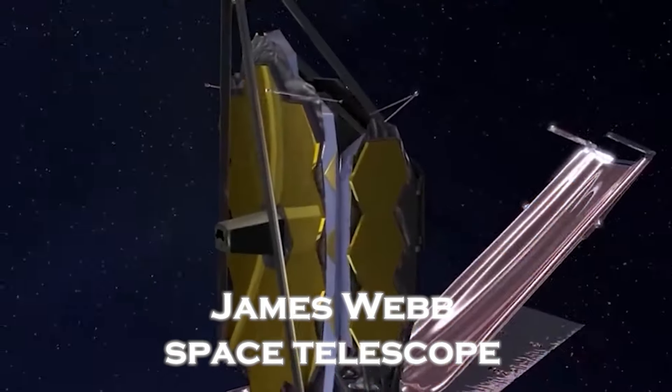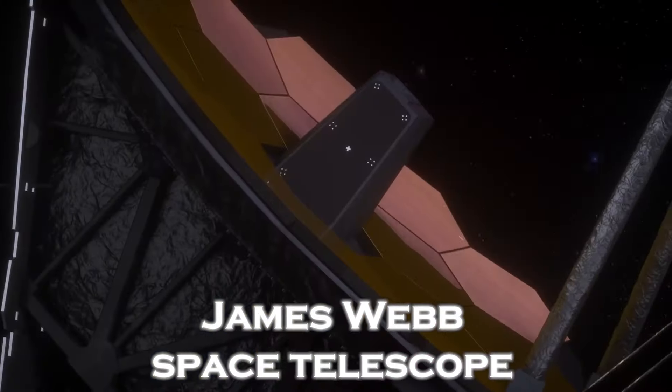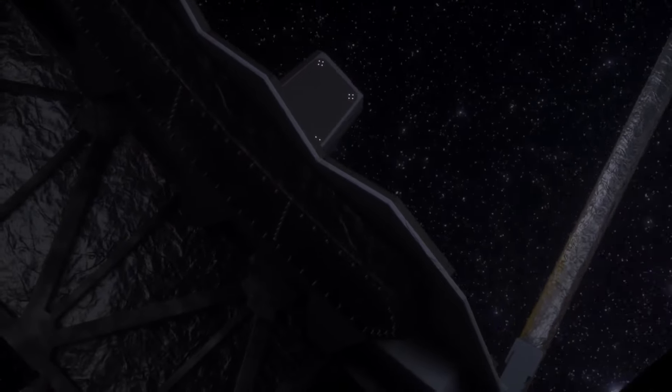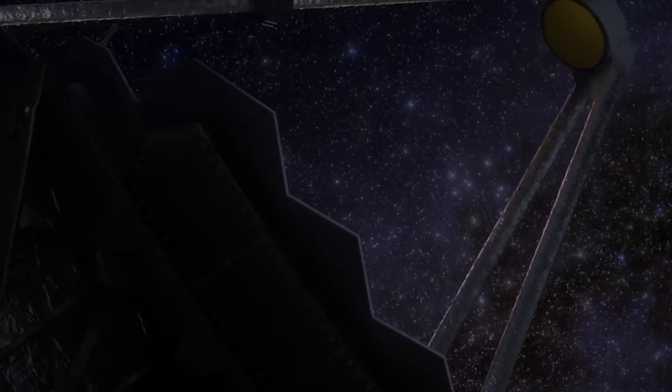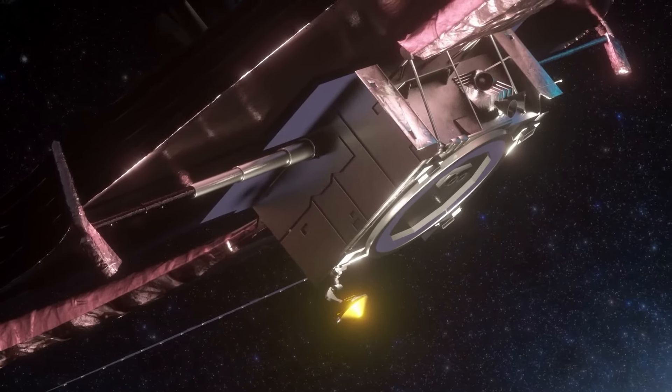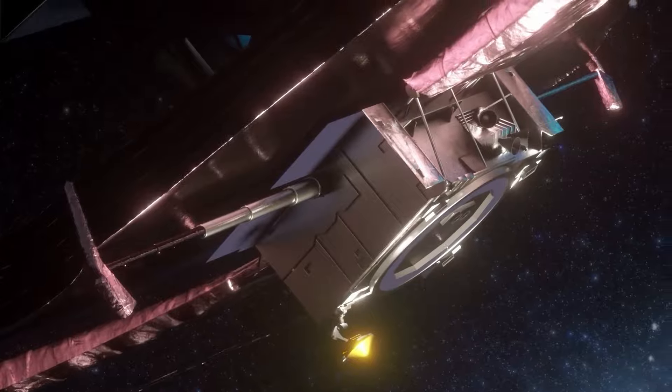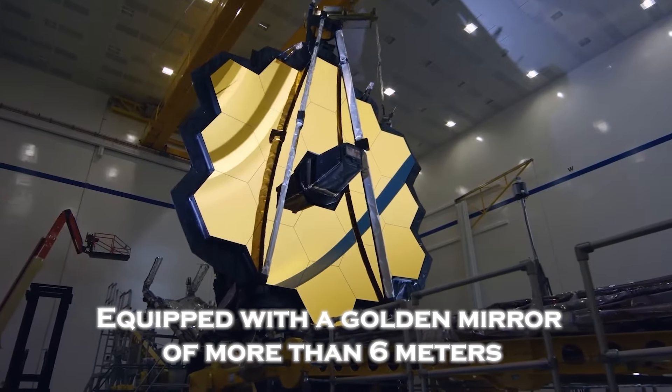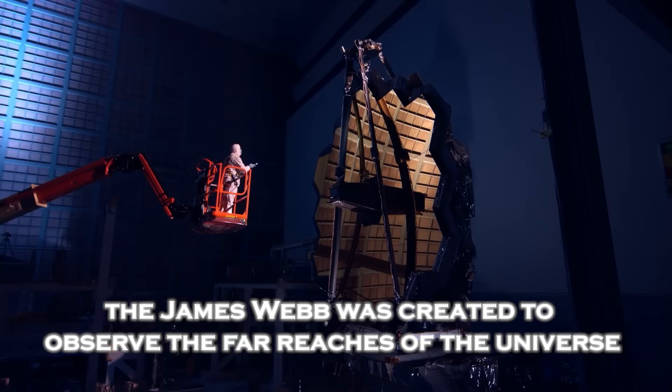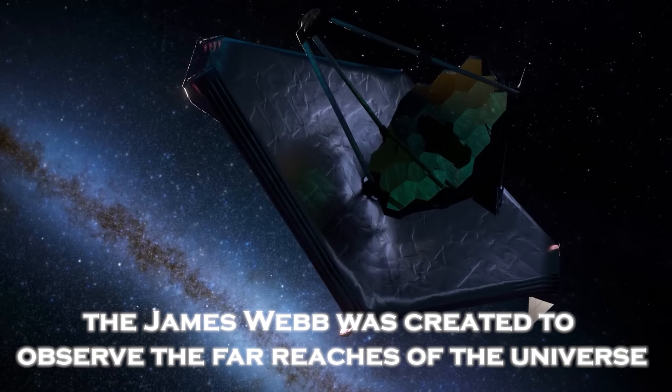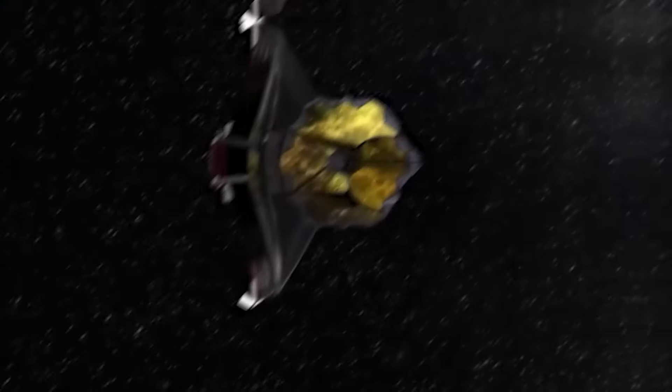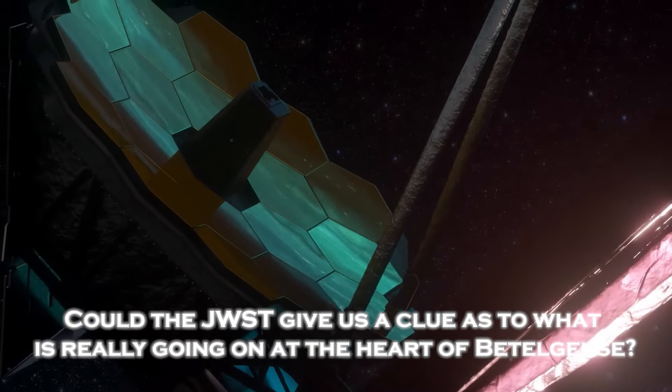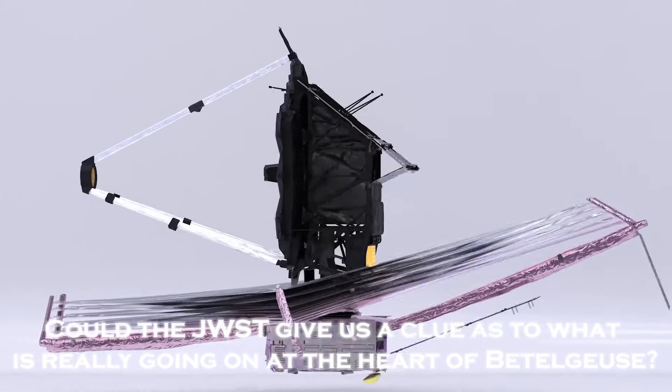But then came the James Webb Space Telescope, a marvel of human engineering, designed to see further than we had ever imagined. With its launch, the world of astronomy received an unprecedented tool capable of capturing details of the cosmos like never before. Equipped with a golden mirror of more than 6 meters, the James Webb was created to observe the far reaches of the universe, but also to unravel the mysteries of our own galactic neighborhood. Betelgeuse became a prime target for this mission.